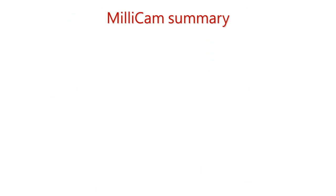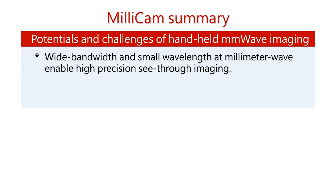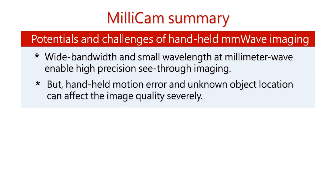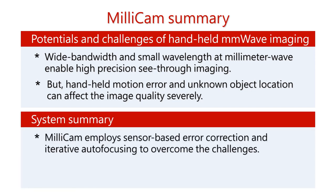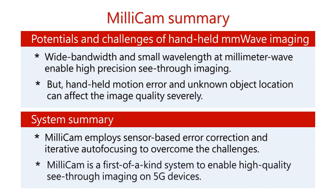To summarize the talk, wide bandwidth and small wavelength of millimeter wave signal can enable high precision see-through imaging, but handheld motion error and unknown object location can affect the image quality severely. Millicam is a system that employs sensor-based error corrections and iterative autofocusing to overcome the challenges. It is a first of a kind system to enable high quality see-through imaging on 5G devices.